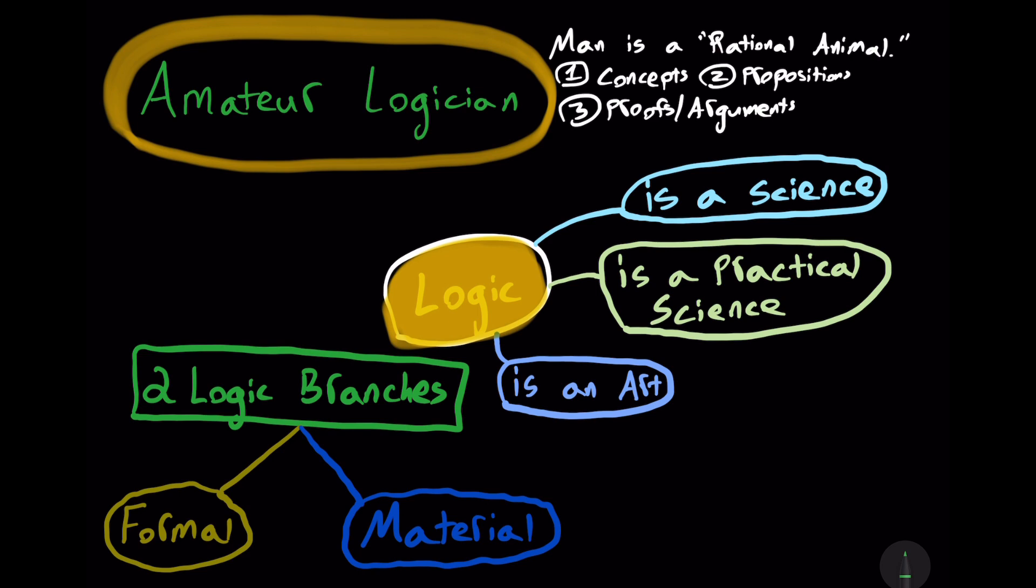Given some already known facts, namely premises, logic can help us extend our knowledge to derive new facts that follow from those already known facts, those already known premises, to derive conclusions. It takes what we already know as true and then figures out what follows from those truths as also being true, as necessarily being true.